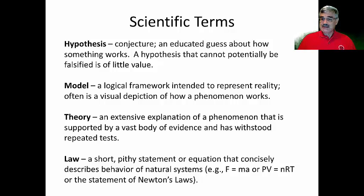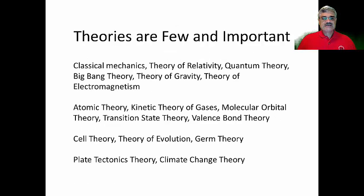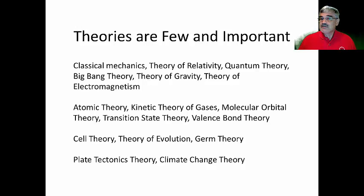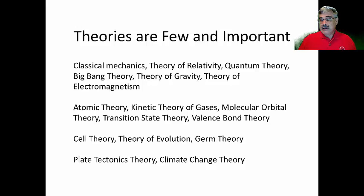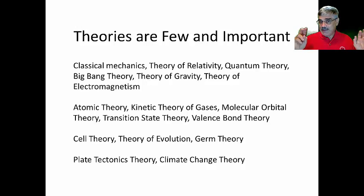When talking to a scientist, if they use the word theory, they oftentimes mean it with a capital T — like the theory of gravity, the grand explanation. Theories are few and important. In physics there are theories related to classical mechanics, the theory of relativity, quantum theory, the big bang theory, the theory of gravity, and the theory of electromagnetism. In chemistry there's atomic theory, kinetic theory of gases, molecular orbital theory, and transition state theory. In biology there's cell theory, the theory of evolution, and germ theory. In geosciences there's plate tectonic theory and climate change theory. This is a relatively short list of capital-T theories, and in this class we will actually go over most of them.